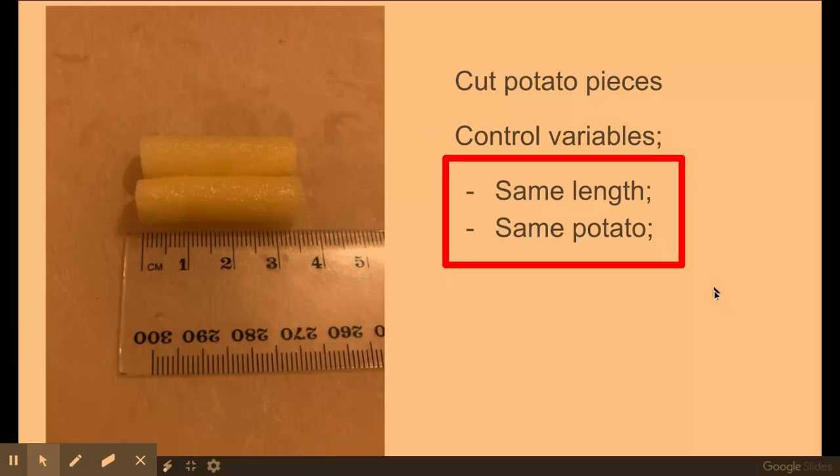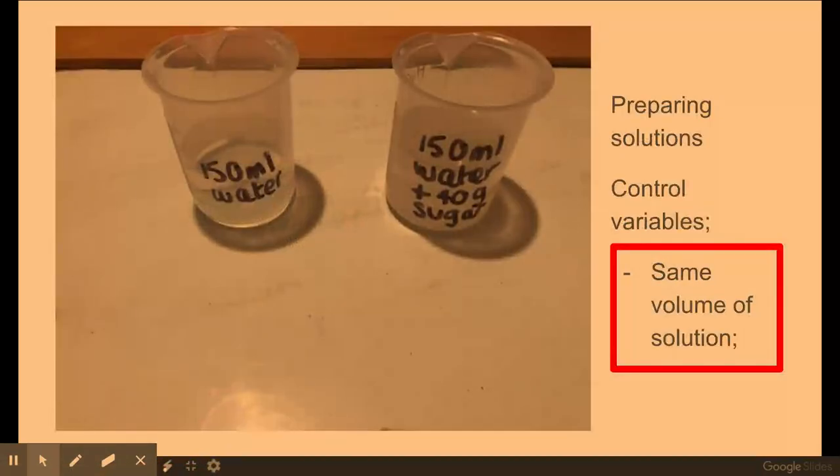So here are some control variables that are taken from your mark scheme. Once I've got my potato pieces and the cuts are the same length, what I then need to do is prepare my solution.